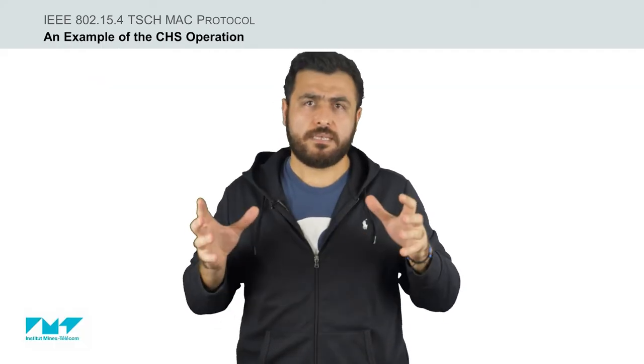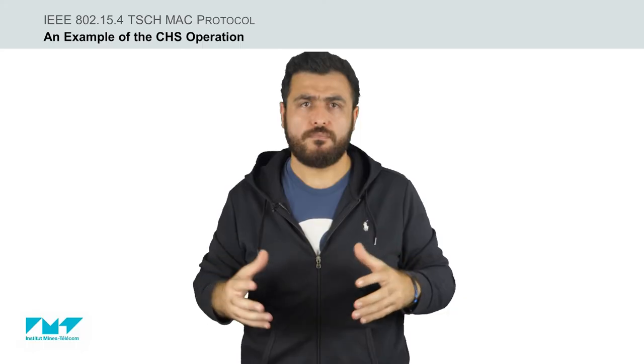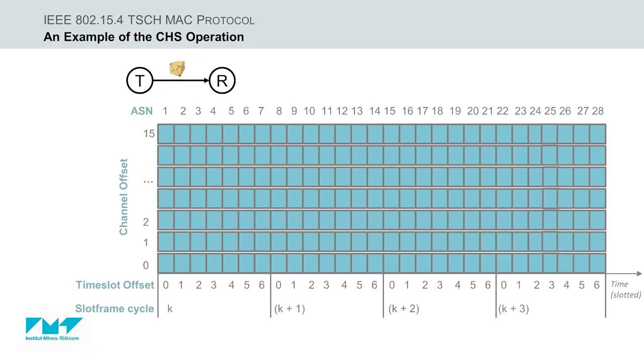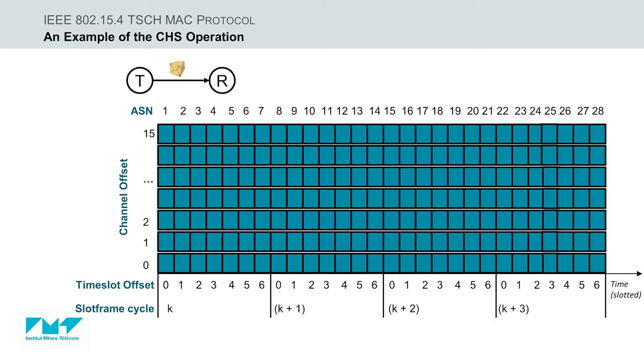Let's take an example to see how it works. Let's assume that node T acts as a transmitter, while node R as a receiver. Then here we have the schedule of node T, where X axis represents the time slot offset, and as it can be observed, a slot frame consists of 7 time slots.